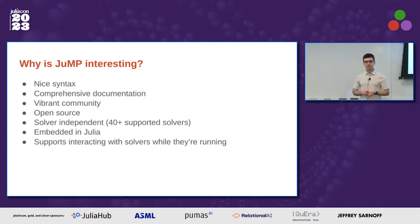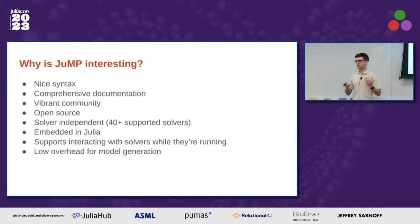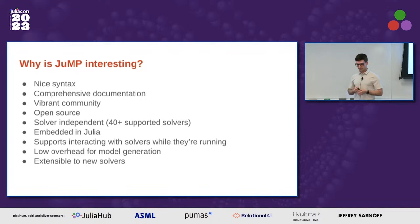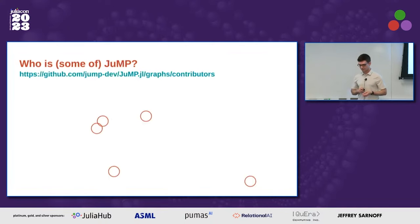JuMP supports interacting with solvers while they're running. This is a relatively advanced but useful feature — you can interact with the optimization algorithm in a way that, for example, lets you implicitly define constraints instead of enumerating them. JuMP also has low overhead for model generation, which was one of the original selling points compared to Python-based libraries, and we're still working hard to keep model generation time under control. Finally, JuMP is extensible to new solvers — we have 40 solvers connected, many contributed by the community — and extensible to new problem classes.